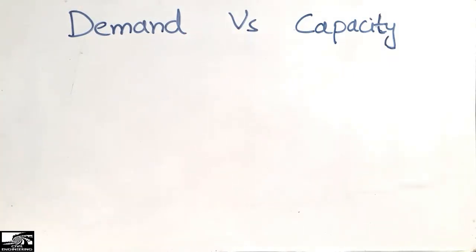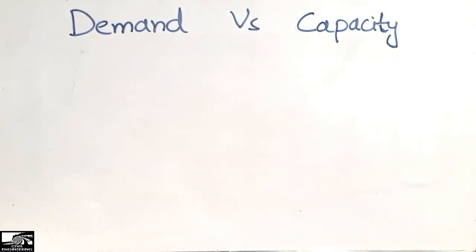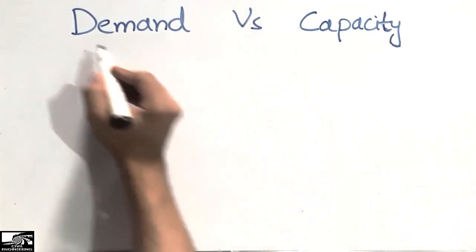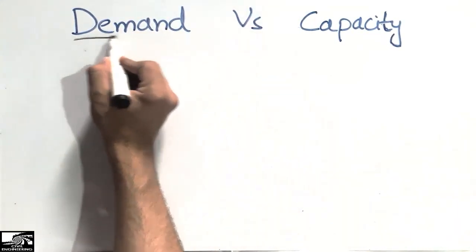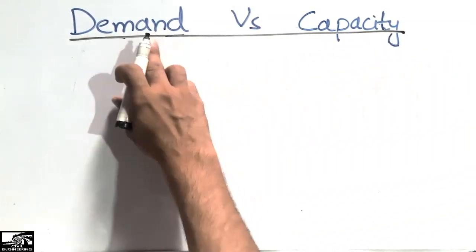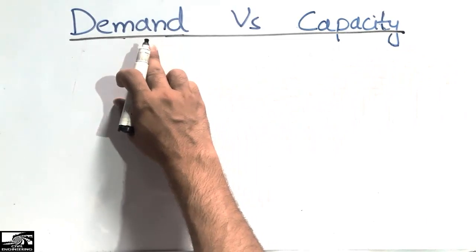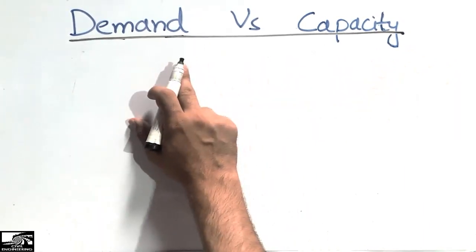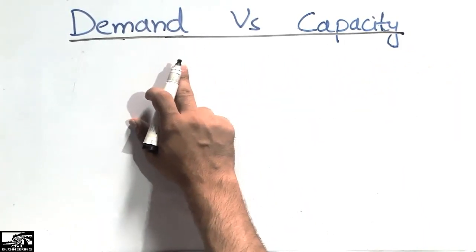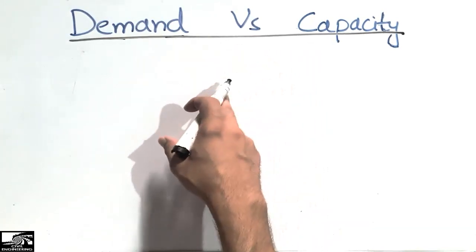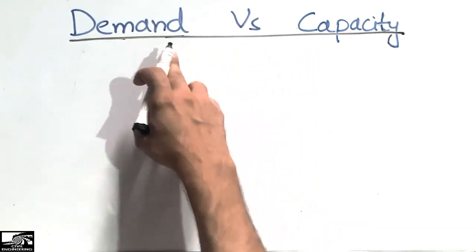Hello guys, welcome back to the Seven Engineering YouTube channel. Please subscribe to our channel for daily Seven Engineering videos. Today our lecture is about the difference between demand and capacity — these are two different terms used in Seven Engineering structures. I will define the two terms first and then explain them with examples.